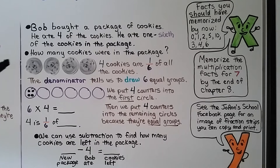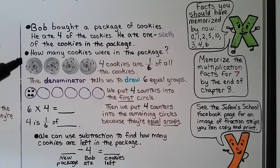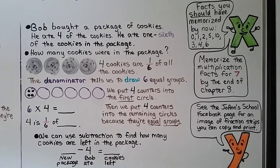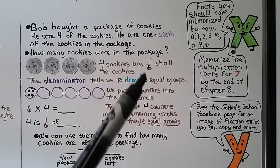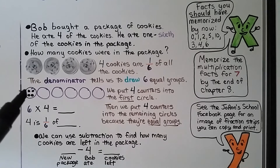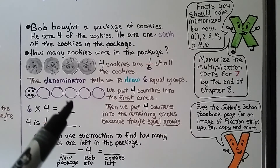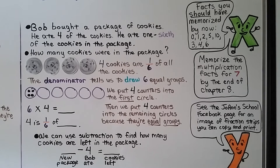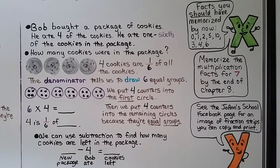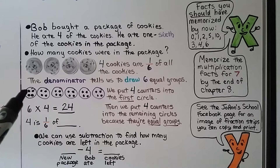Bob bought a package of cookies and he ate 4 of them. He ate one-sixth of the cookies in the package. So how many cookies were in the package? Well, 4 cookies are one-sixth of all the cookies, and the denominator tells us to draw 6 equal groups. We draw 6 circles and put 4 counters for the 4 cookies into the first circle. Then we put 4 counters into the remaining circles because they're equal groups. We have 6 groups with 4 in each group — 6 times 4 is equal to 24. That means 4, this first circle, is one-sixth of 24.